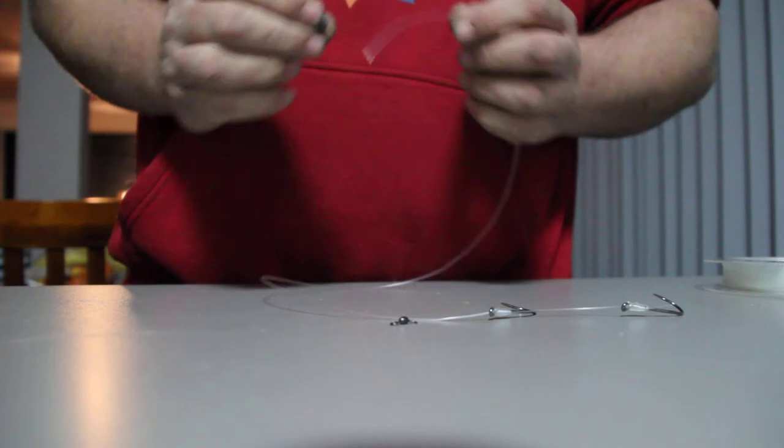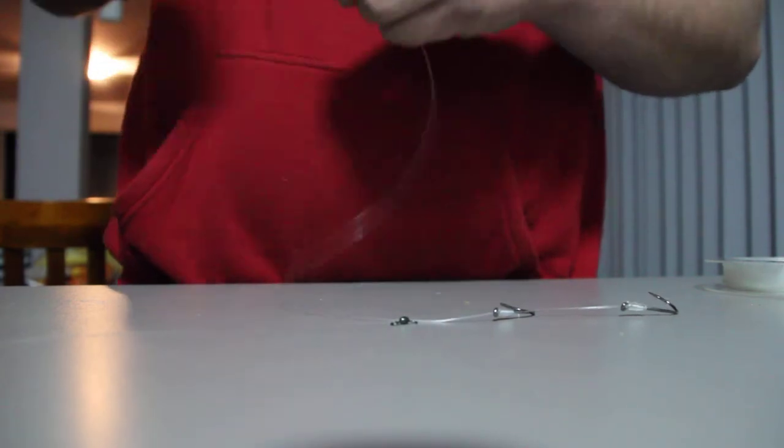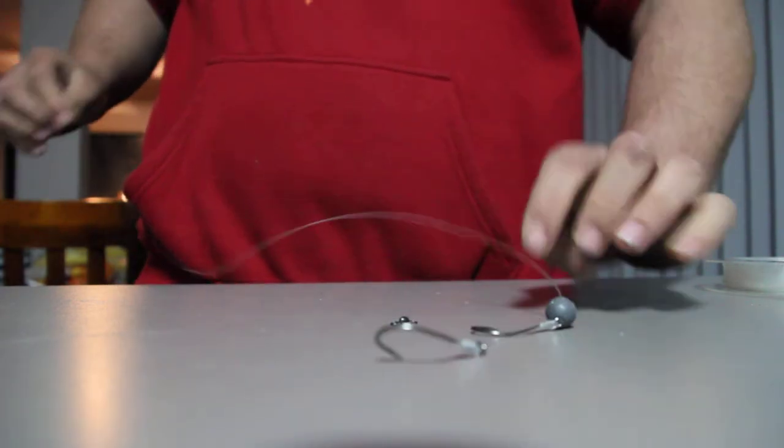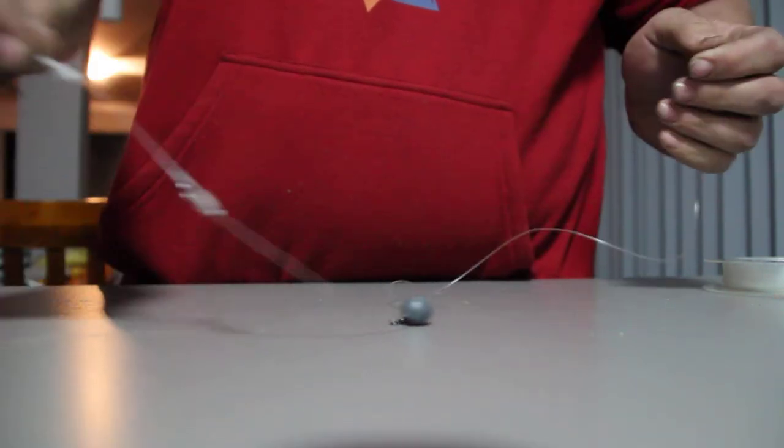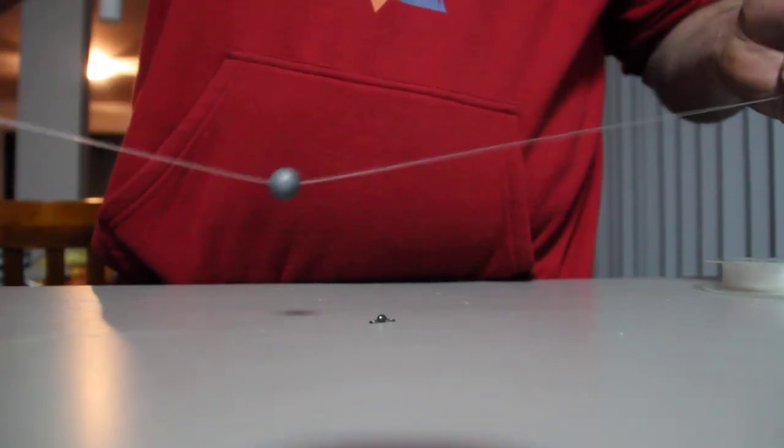Next thing is a small ball sinker—just throw it straight on like so. I'll leave it running so if the fish picks it up, it won't feel the weight and then you can hook it.